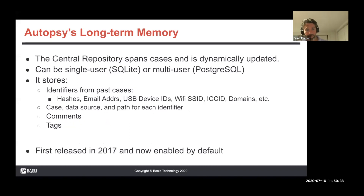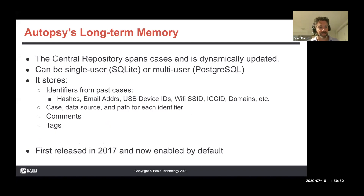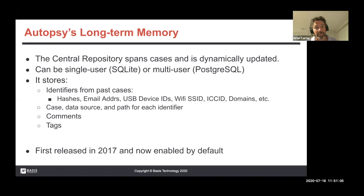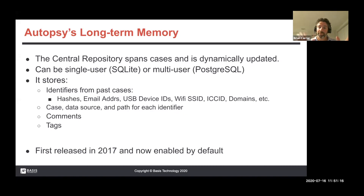Autopsy also has a long-term memory — we call it the Central Repository. This allows you to span cases and is dynamically updated. As you do things in the software, this database gets updated. You can have it be single user or multi-user — SQLite or Postgres. What it stores are identifiers from your cases: MD5 hash values, email addresses, USB device IDs, Wi-Fi SSIDs, ICCID IDs, domain names — probably a dozen things stored away for future reference.